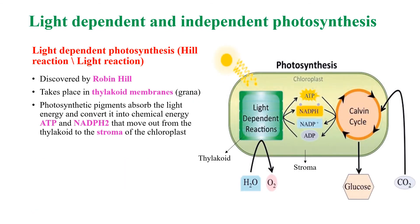Photosynthesis occurs in the green parts of the plant such as leaves, stems, and floral buds. The entire process of photosynthesis takes place inside the chloroplast.